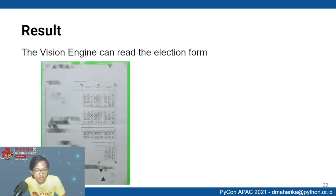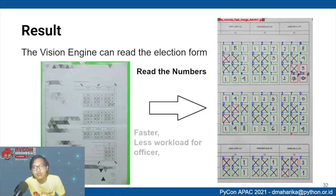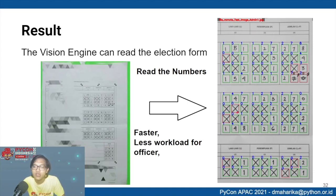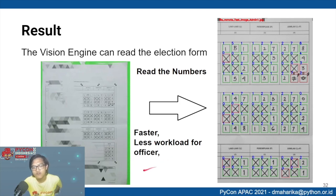The result: this vision engine can read the election form and output the numbers digitally. For example, reading values like 1, 5, 1, 1, 2, 7, 1, 2, 7, 8, 0, 0, 1, 0, 0, 3, 0, 0, 4 and so on. There may be occasional wrong readings, but that's fine — the district officer validates the result. Instead of manually inputting 102 numbers, the officer only needs to correct the few wrong ones, perhaps 2 out of 102. Less workload, less human error — a very good outcome.